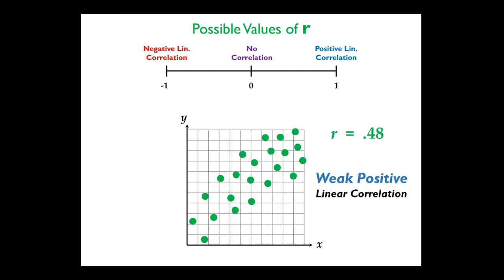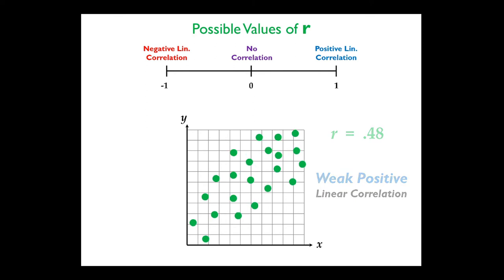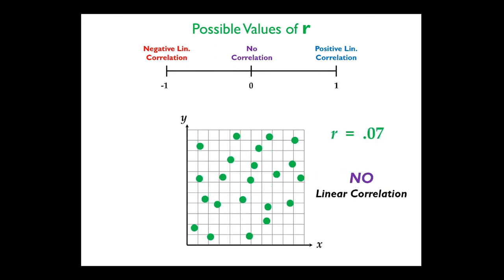A scatter plot trending upward but more spread out might have r around 0.48 — a weak positive linear correlation because the points are more spread out. Something even more scattered with r around 0.07 is considered no linear correlation, since 0.07 is pretty close to zero.